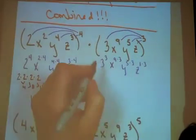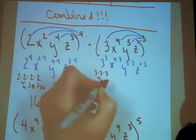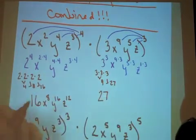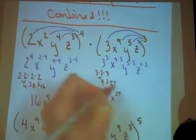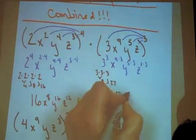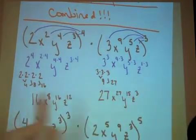A 3 cubed is 3 times 3 times 3, which is 9 times 3, which is 27. So I have the whole number 27. x to the 9 times 3 is 27. y to the 5 times 3 is 15, and z to the 1 times 3 is 3.